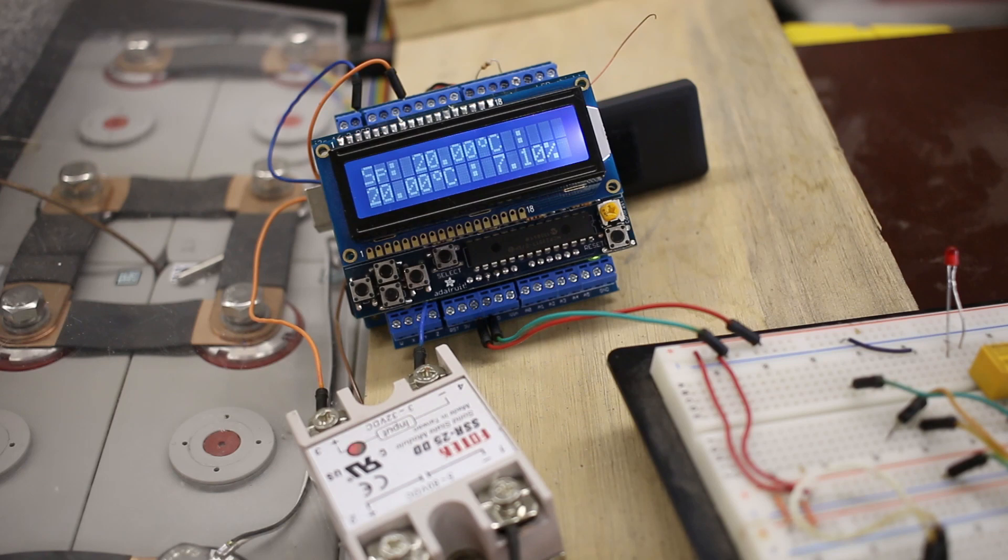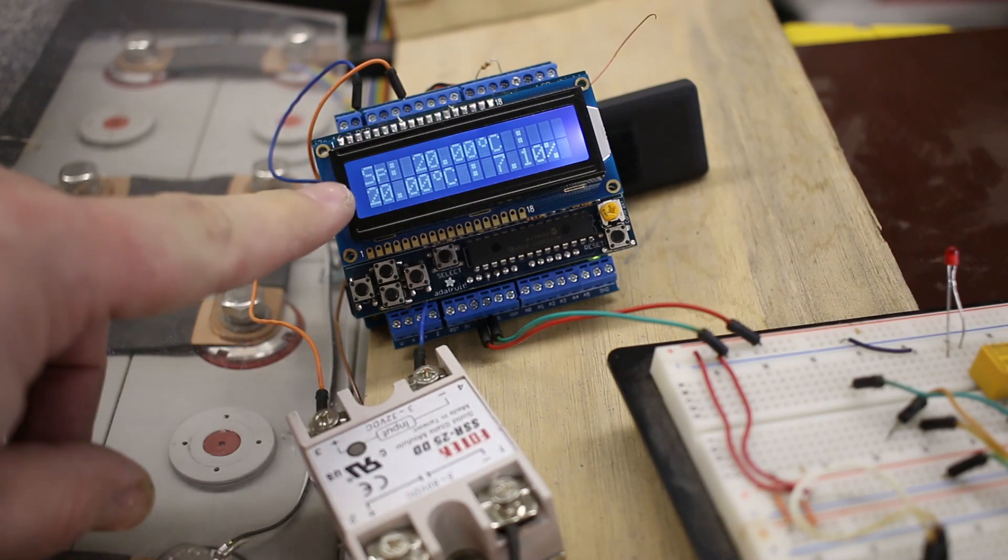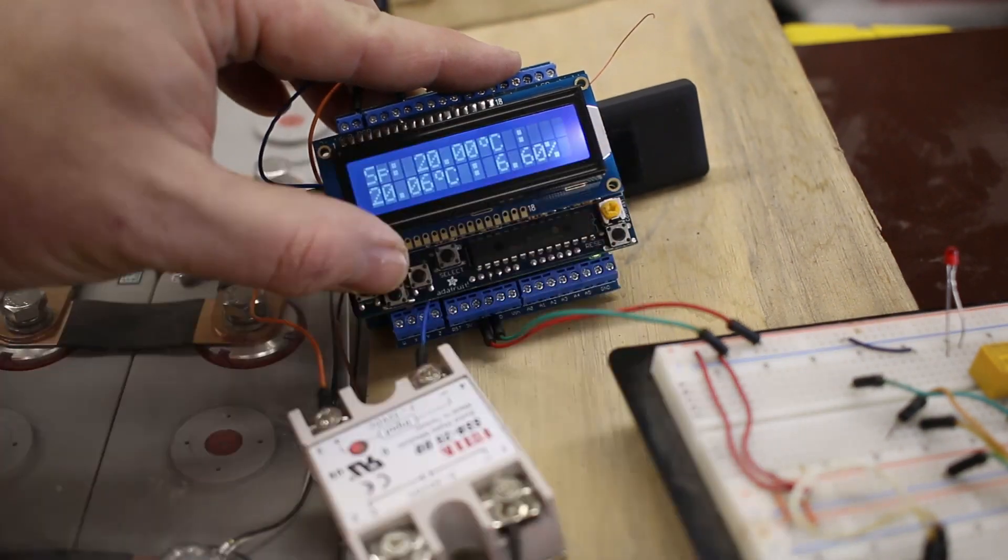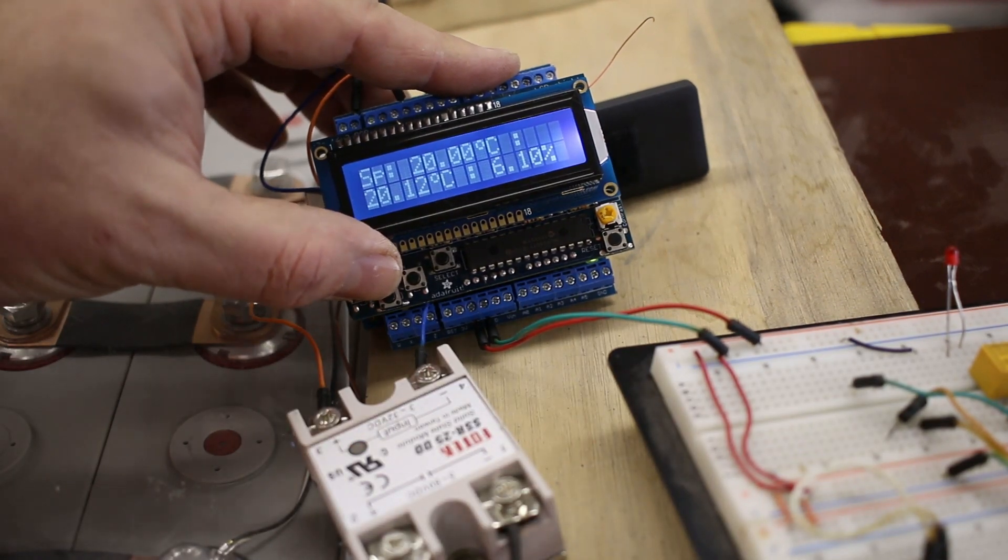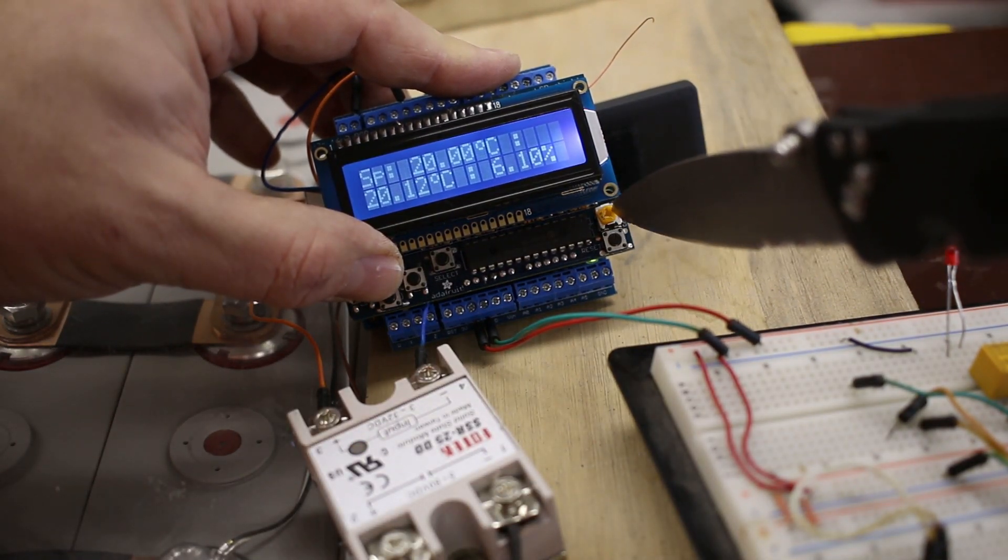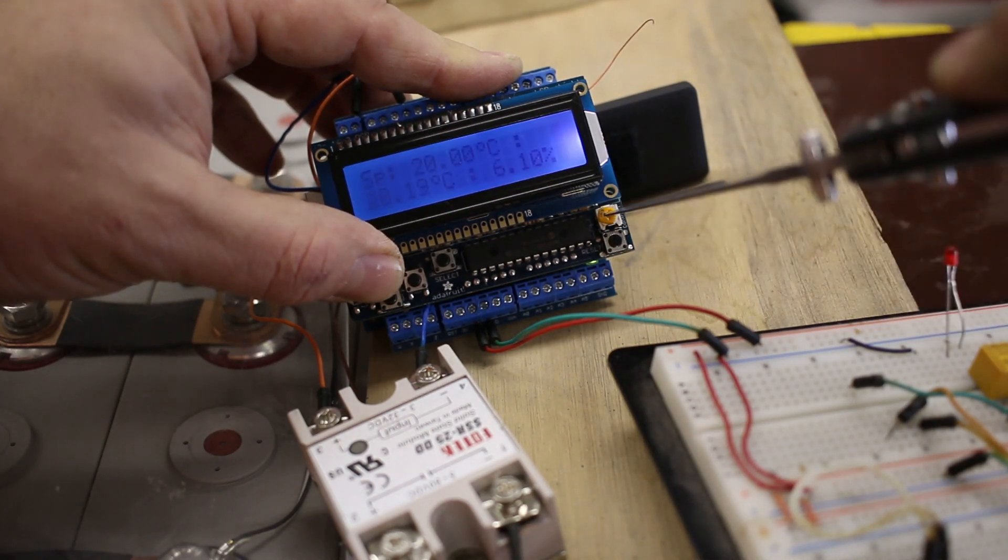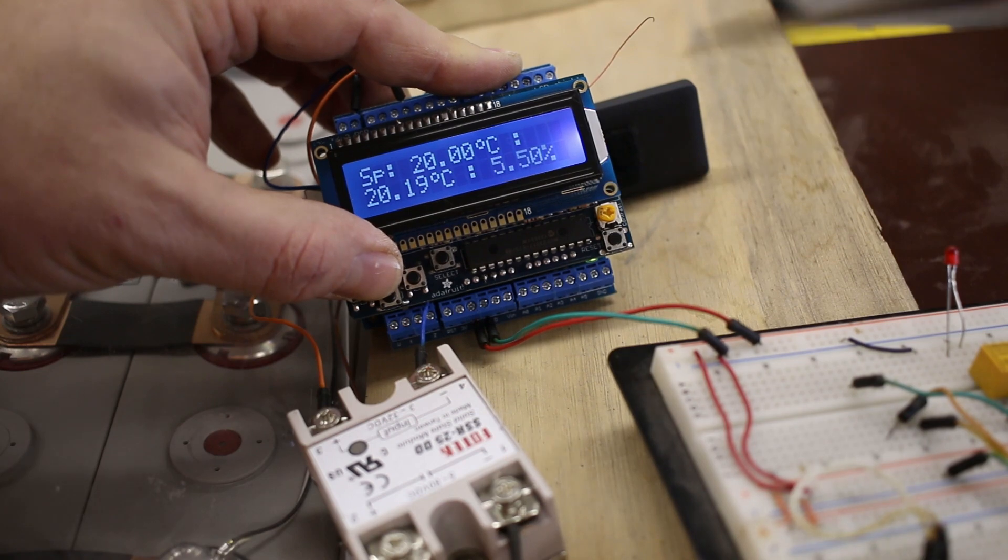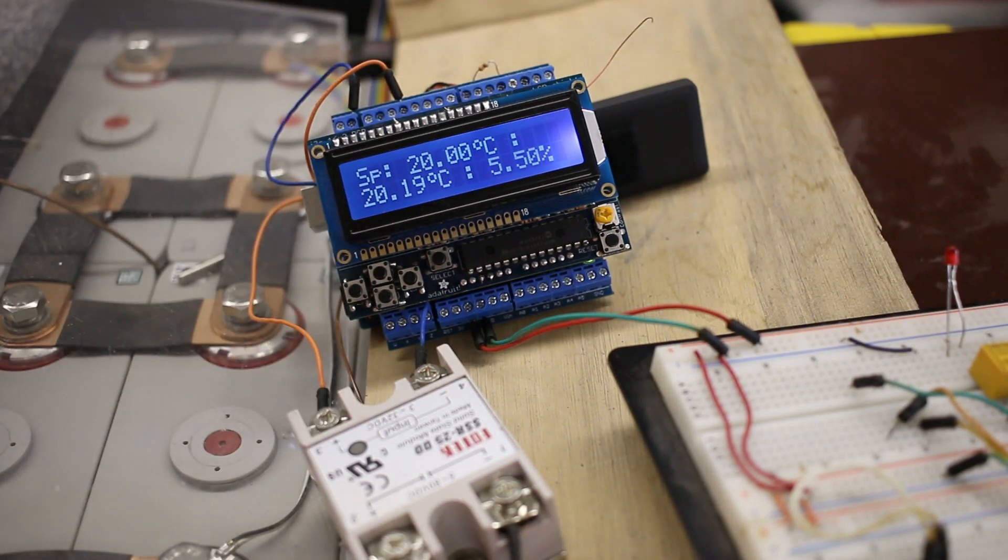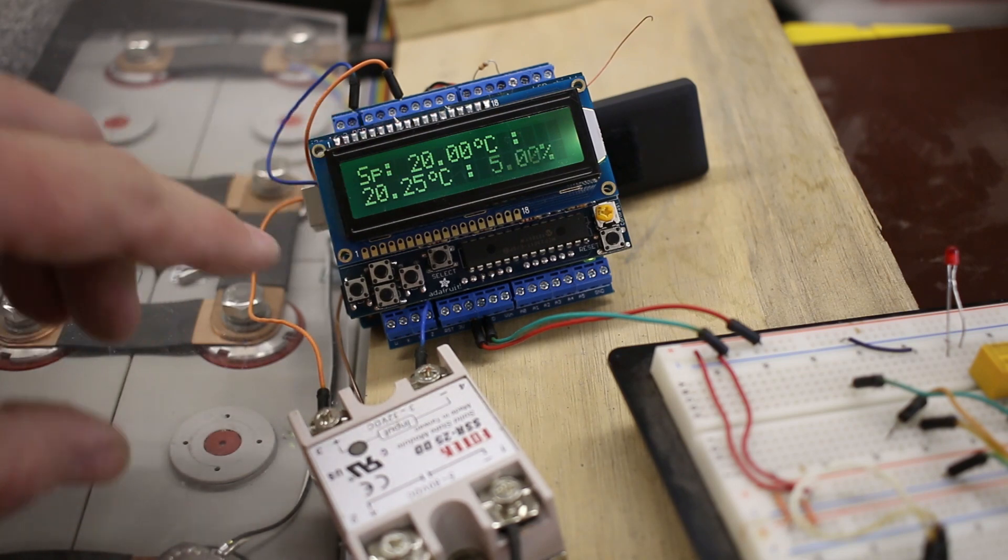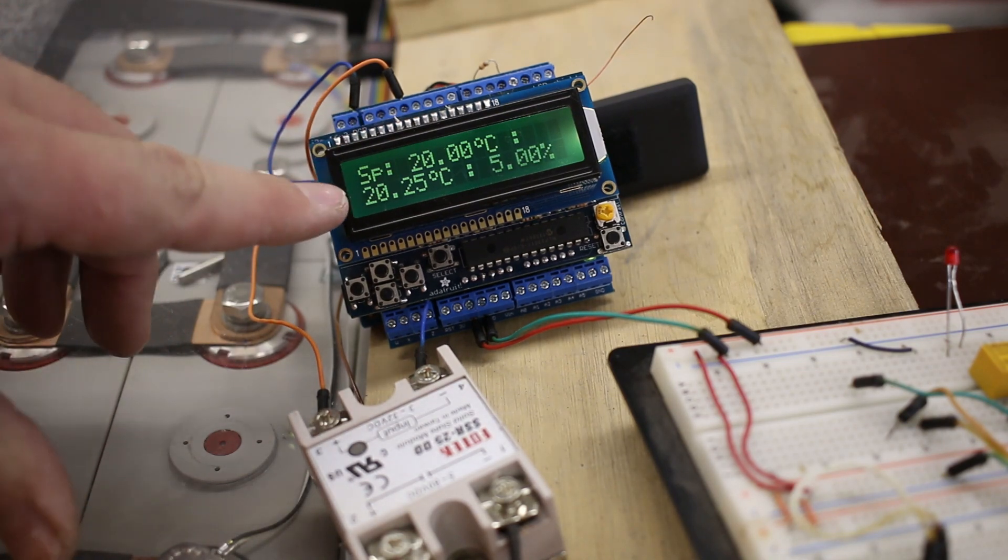So it's only been running about five minutes here and you can see it's already at 20 degrees Celsius. Let me adjust the contrast on that. There you go. So as I said, the set point is 20. It's only been running five minutes although it came from 16 degrees. And now it's at 20.25.